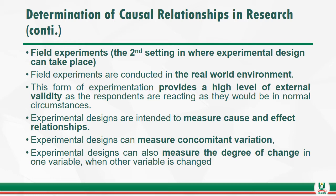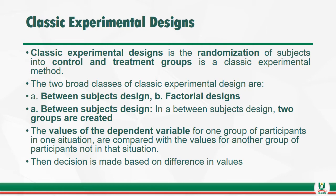Experimental designs are intended to measure cause-and-effect relationships. They can measure concomitant variation and the degree of change in one variable when other variables are changed. Experimental design involves the randomization of subjects into control and treatment groups, which is a classical experimental method. The two broad classes of classic experimental designs are between-subject designs and factorial designs. We will focus on between-subject designs, as factorial design is beyond this first-degree level.